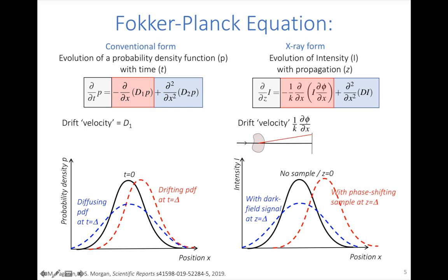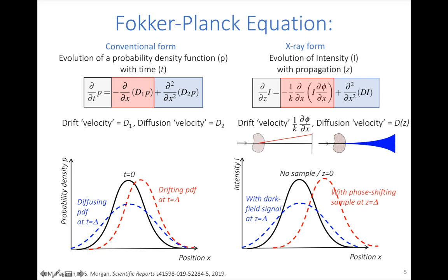The second coefficient is the diffusion velocity d2, describing how quickly the probability density function spreads out — this describes the dark field signal d. We express this as a function of z because the native behaviour of the equation would not give the expected linear increase in diffusion width, so we specify a function of z for the diffusion coefficient that describes the dark field signal.